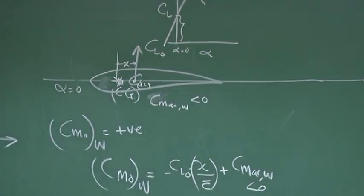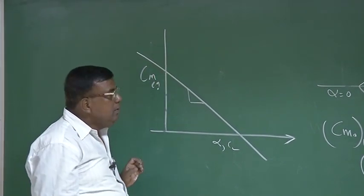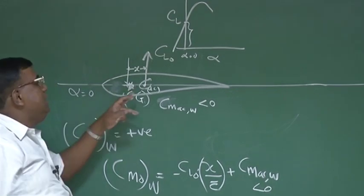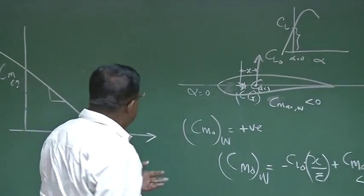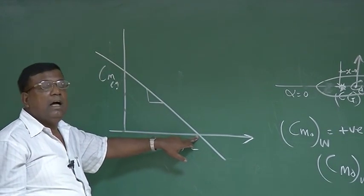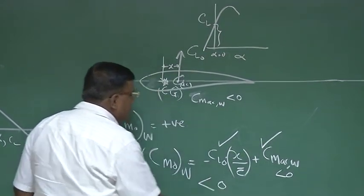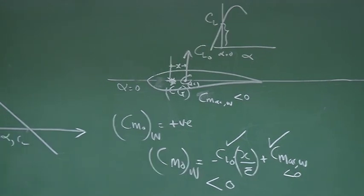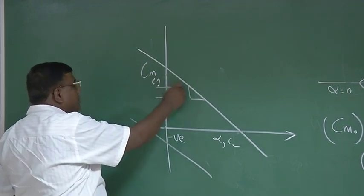See the problem: we wanted the wing to contribute towards making some positive CM0, so that the intercept is positive. But we used a cambered airfoil thinking it is lift-wise advantageous, and we put AC behind the CG thinking it will help static stability — it will, nobody doubts it. But the problem is, we wanted CM0 to become positive to have trim at positive alpha or CL. What is happening? This term is negative, this term is negative. So the whole wing contribution towards CM0, instead of positive, is becoming negative — which a designer will not like.